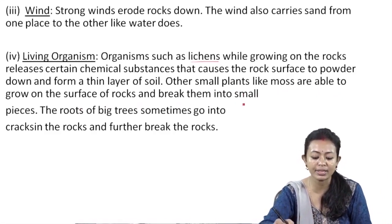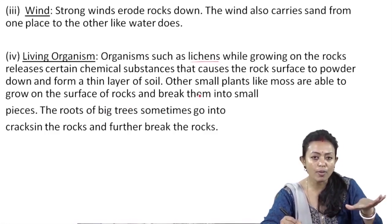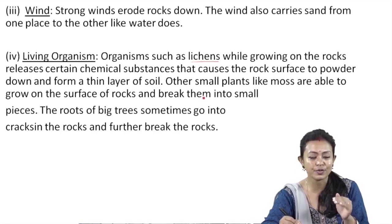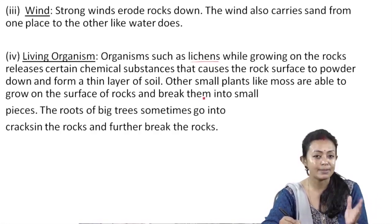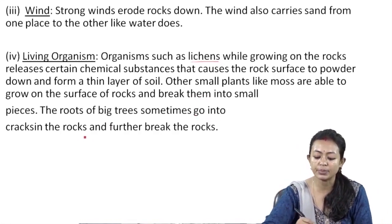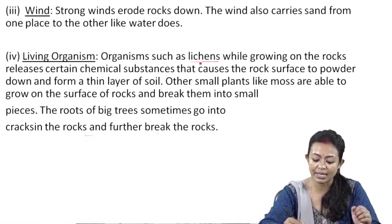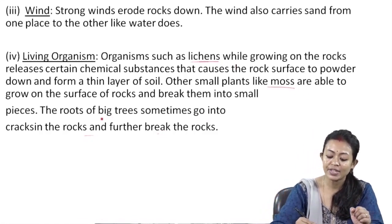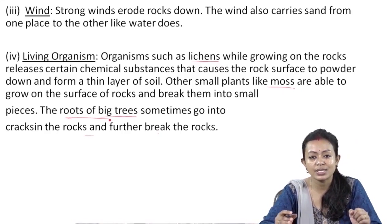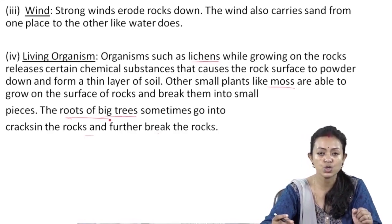Small plants like mosses are also able to grow on the surface of rocks and break them into small pieces. Mosses form a carpet on the surface of rocks, and as they grow, their roots break the rock surface into smaller pieces, helping in weathering. The roots of big trees sometimes go into cracks in rocks and further break them apart. Animals that dig burrows and crevices also contribute to the breaking of soil.